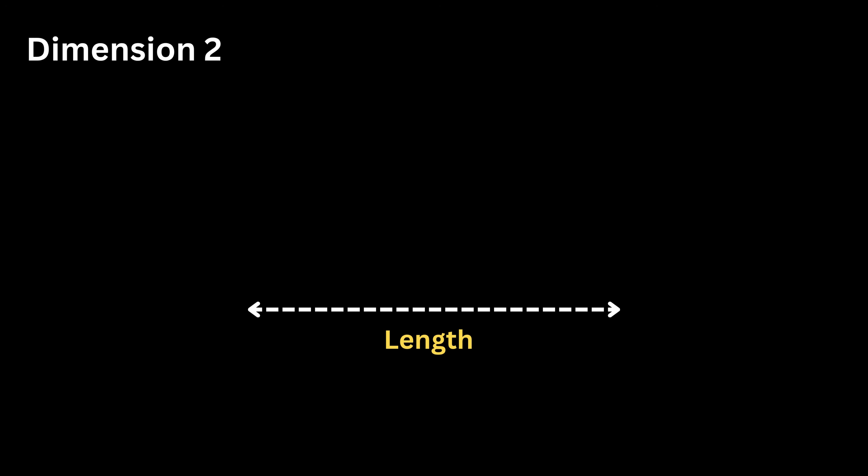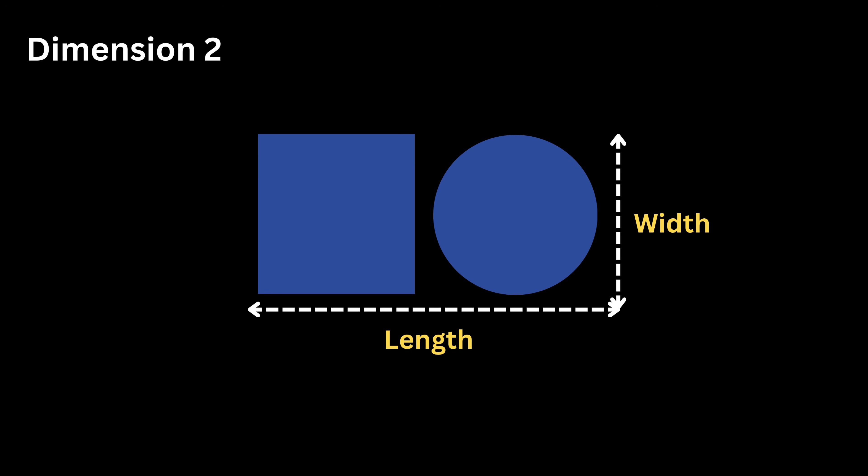Dimension Two gives length plus width. Shapes like squares and circles live here. But nothing can rise above or below because height does not exist yet. This is simple and requires not much explanation.